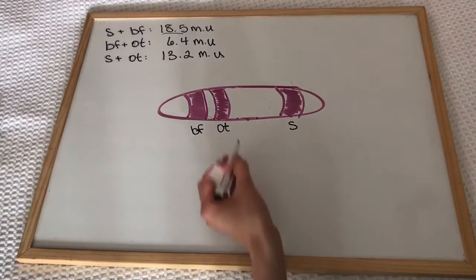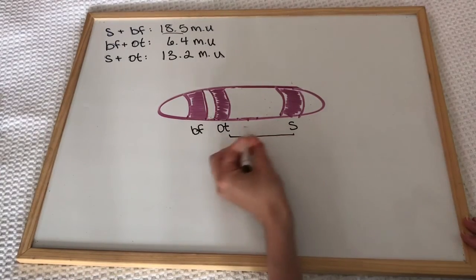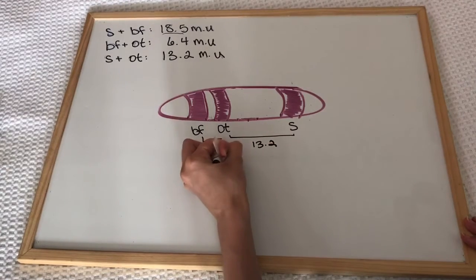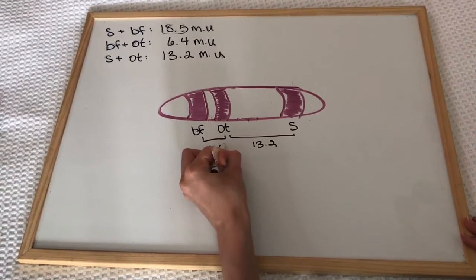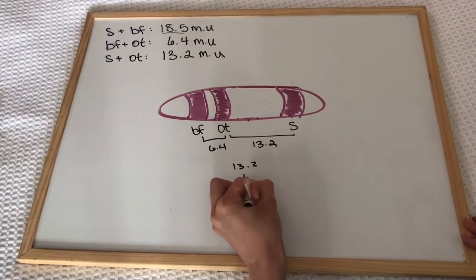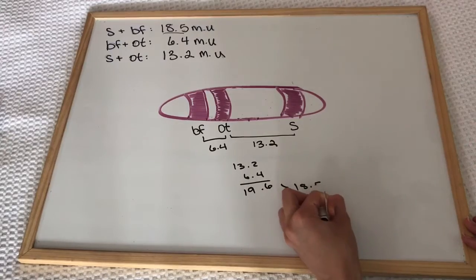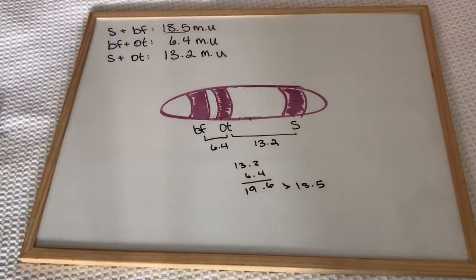Now you might be wondering: wait a second, S and OT are 13.2 mapping units apart, and BF and OT are 6.4 mapping units apart. If you add those together, 19.6 is greater than 18.5, and you're correct.